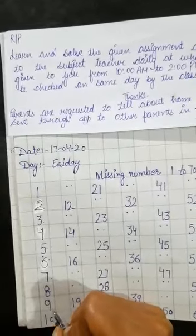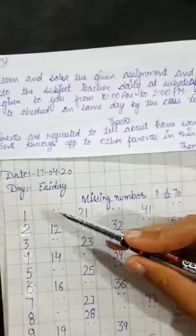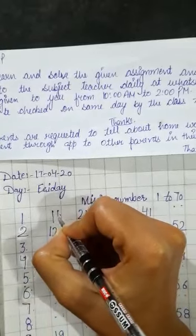What comes after 9? 1, 0, 10. Similarly, same. 1, 1, 11. You have to write here 1, 1, 11.